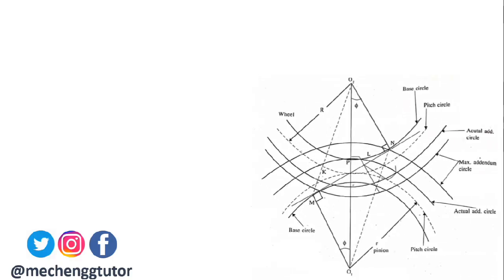We have already discussed in the previous lecture that in order to avoid interference, the addendum circles of the two mating gears — the pinion and the gear — must cut the common tangent on the base circles between the points of tangency. The limiting condition is reached when the addendum circles of the pinion and the wheel pass through points N and M respectively.